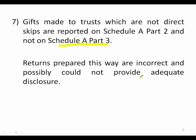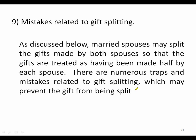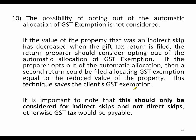Some preparers try to file a joint gift tax return — that's not allowed. If you split the gift with your spouse, typically both spouses must file separately. Another common mistake involves gift splitting traps, which we'll discuss shortly. Finally, consider whether to opt out of the automatic GST exemption allocation. With automatic allocation, if a gift was worth $100 at the time of the gift but only $90 when the return is filed, you might opt out and then allocate only the $90 amount on a subsequent return, saving that extra $10 of GST exemption for your client.